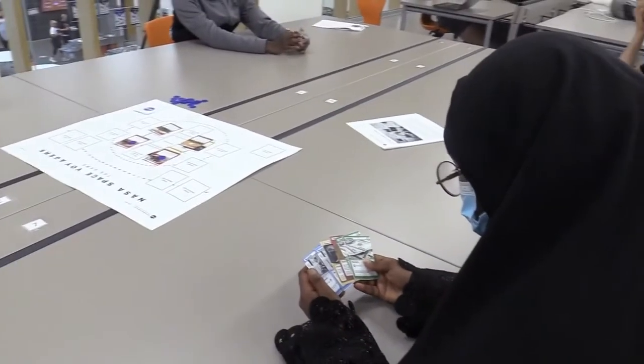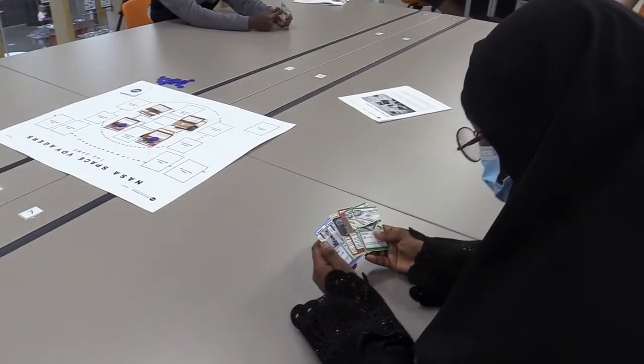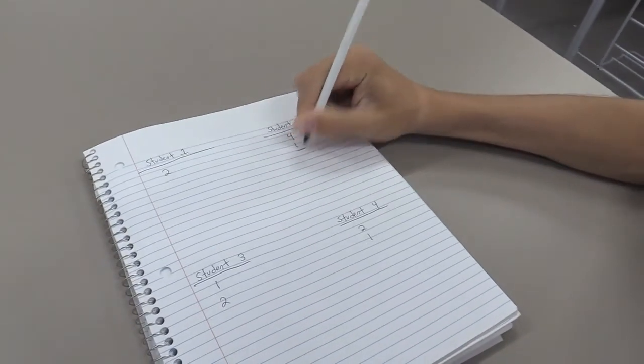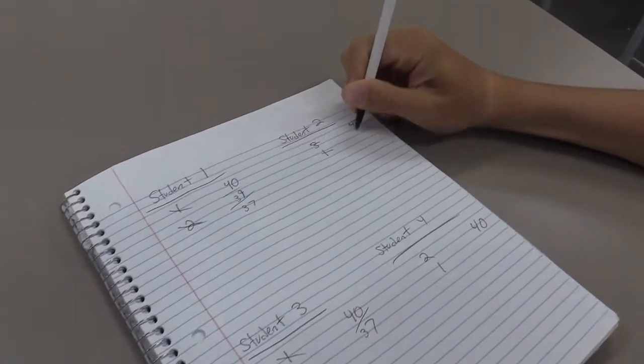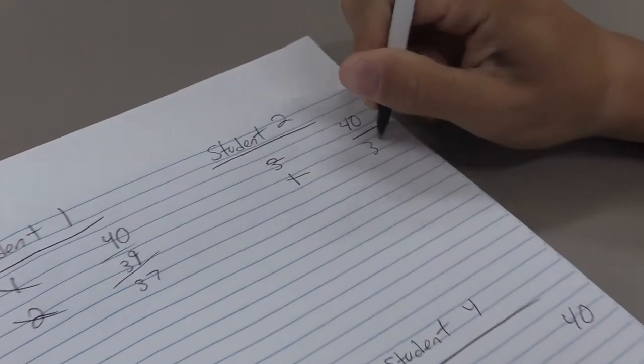Once all the players have taken a turn, tally the research points. Add up the research value of all the used spacecraft and instruments and subtract the amount from the exploration value of the destination.